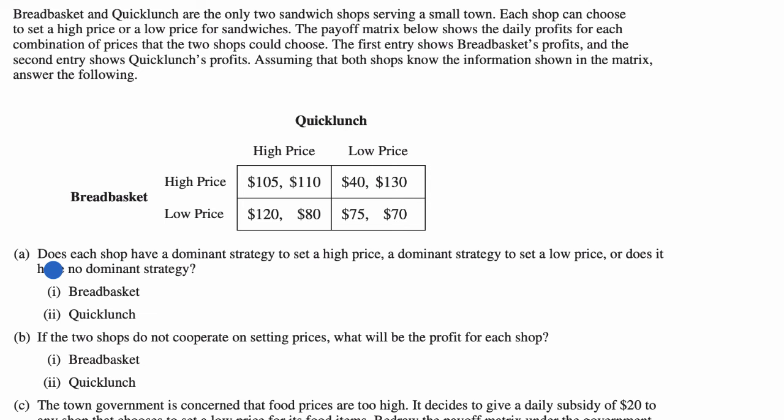Does each shop have a dominant strategy to set a high price, a dominant strategy to set a low price, or no dominant strategy? A dominant strategy means that regardless of what the other player does, you would still be better off making that choice. So a dominant strategy of setting a high price would mean that regardless of whether the other player sets a high or low price, a high price would always make sense for you.